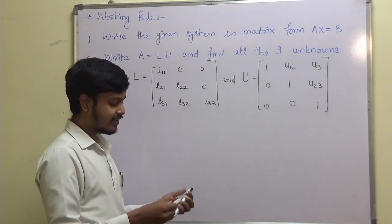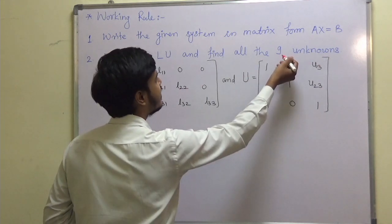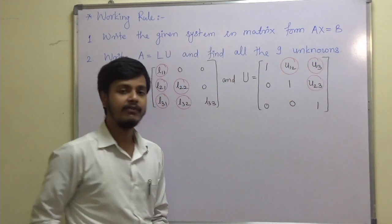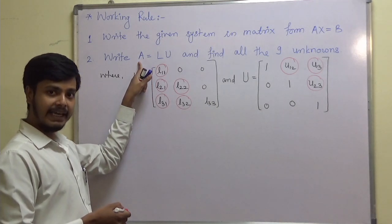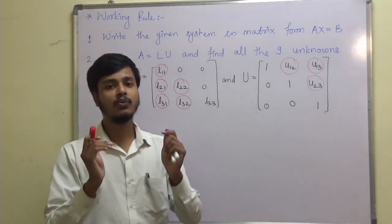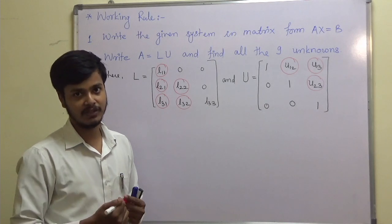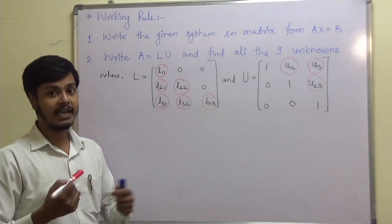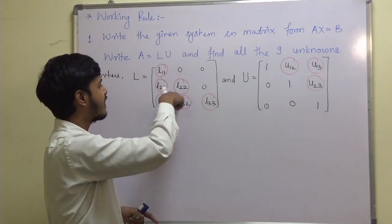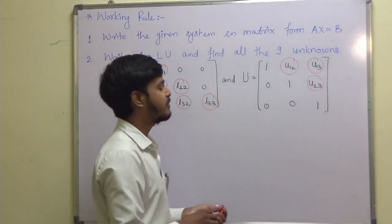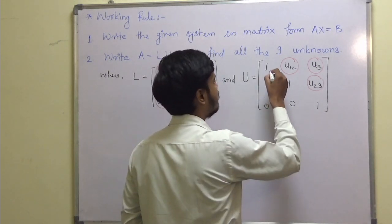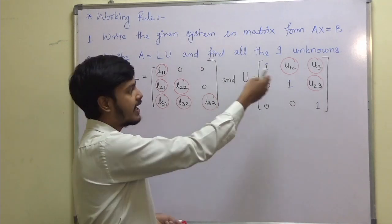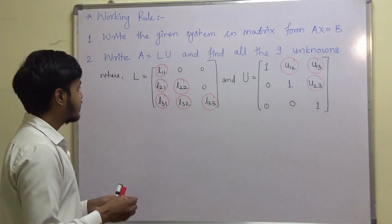As you can see in L and U, how many unknowns are there? We have 9 unknowns — that is why I said find all 9 unknowns. We will be having matrix A, and on the right-hand side we multiply these two matrices and equate the coefficients to get the values of all 9 unknowns. One remark: you have to take the diagonal elements as 1 in the upper triangular matrix — then and only then will you get all 9 unknowns; otherwise it will be a mess.